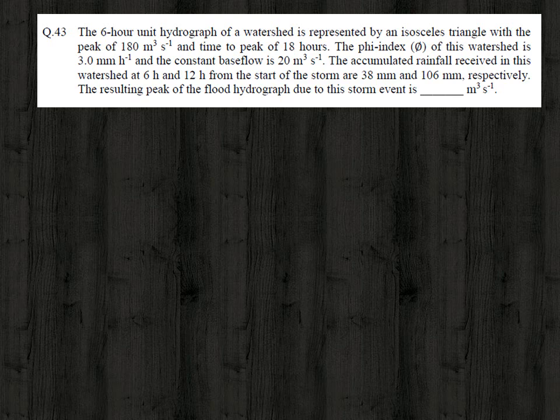The accumulated rainfall received in the watershed at 6 hours and 12 hours from the start of the storm are 38 mm and 106 mm respectively. The resulting peak of the flood hydrograph due to the storm event is dash cubic meter per second.